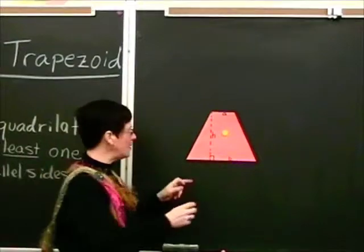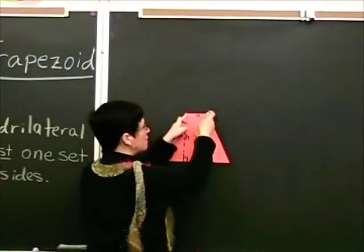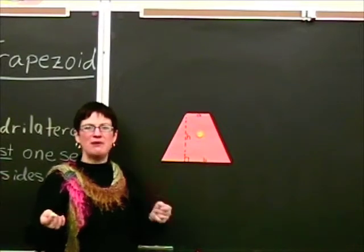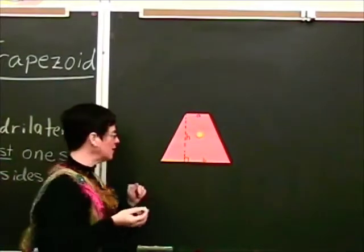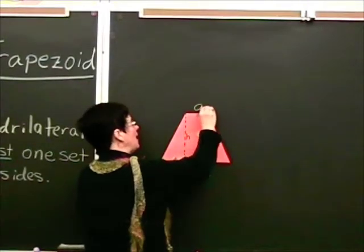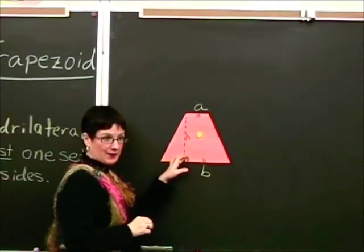Now, the thing I want to really point out to you here is this. With the trapezoid, your bases are different lengths. So, you can't call them both B like we did with the parallelogram. I always call the bottom one B and the top one A. Okay.